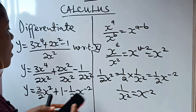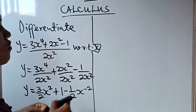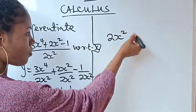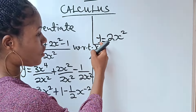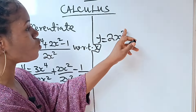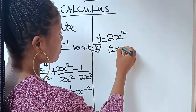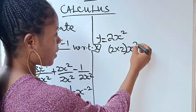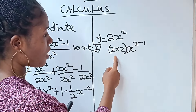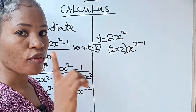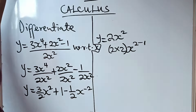In differentiation, for those who don't really know how to differentiate, it's actually very easy. For example, if you have 2x squared and you are asked to differentiate with respect to x, you multiply the power by the coefficient — that is 2 times 2 — then write x and subtract 1 from the power, giving 4x to the power of 1.